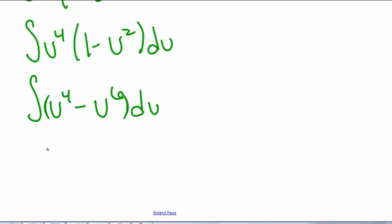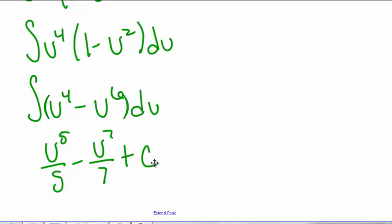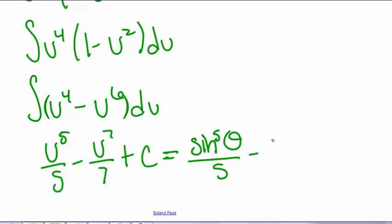Integrating gives us u to the fifth divided by 5 minus u to the seventh divided by 7 plus a constant C. Now we plug back in u equals sine of theta, so we get sine to the fifth of theta divided by 5 minus sine to the seventh of theta divided by 7 plus a constant.